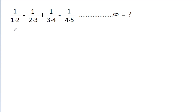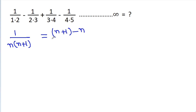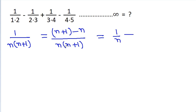If we take 1/(n(n+1)), then 1 can be written as (n+1 - n) / (n(n+1)), so 1/(n(n+1)) = 1/n - 1/(n+1).